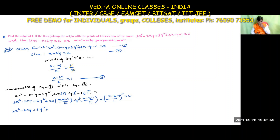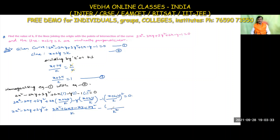Expanding: 2x² - 2xy + 3y² + (2x² + 4xy)/k - (xy + 2y²)/k - (x² + 4xy + 4y²)/k² = 0. Taking k² as common denominator, multiply the first three terms by k².